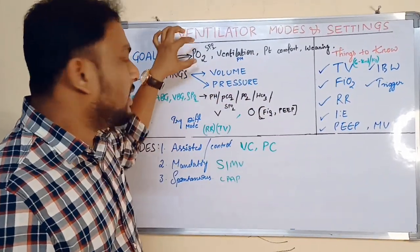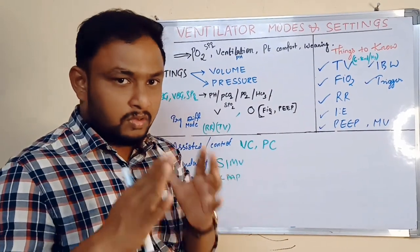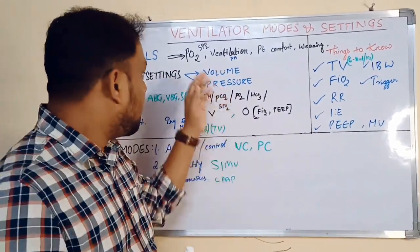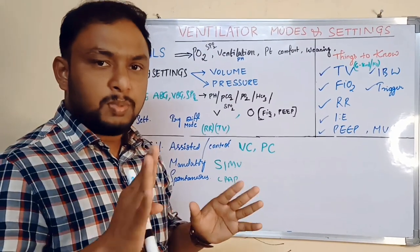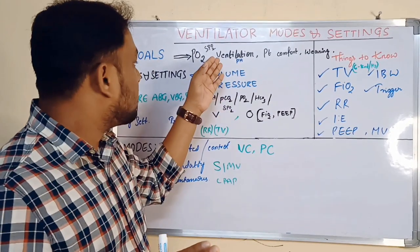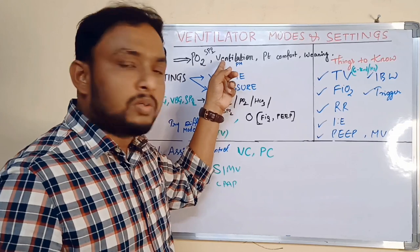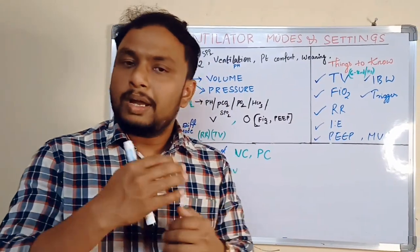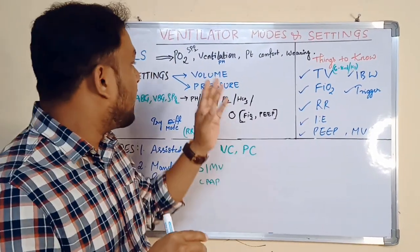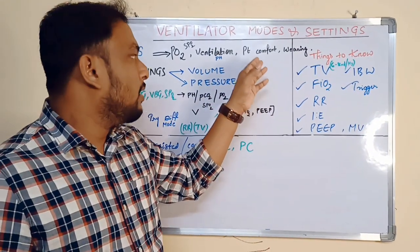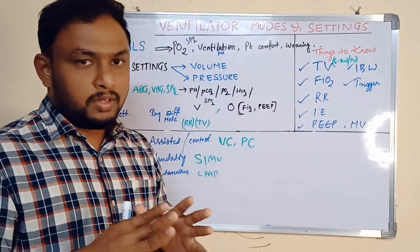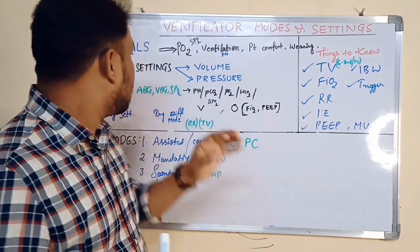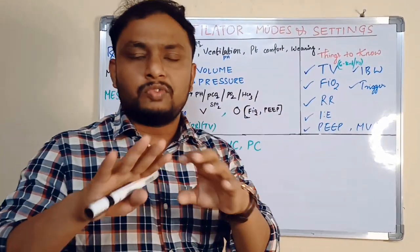To maintain adequate oxygenation — how? By maintaining the PaO2 and SpO2, oxygen saturation percentage. And to give proper ventilation — how? By maintaining the proper pH in the blood. And to give comfort, and to try weaning trials. So these are your treatment goals when you are using your ventilator.